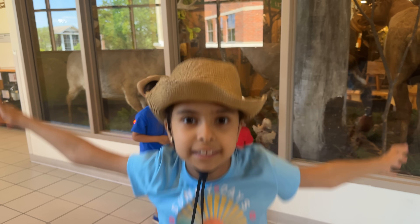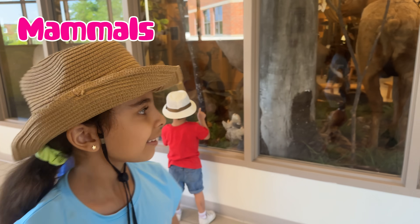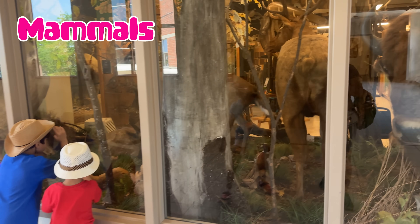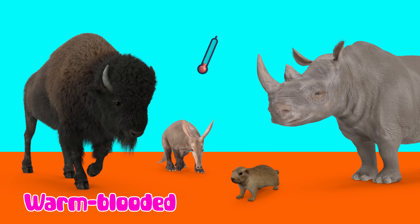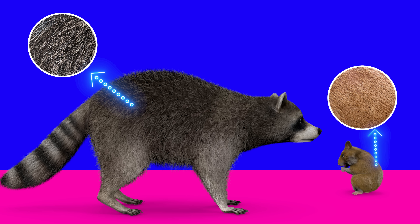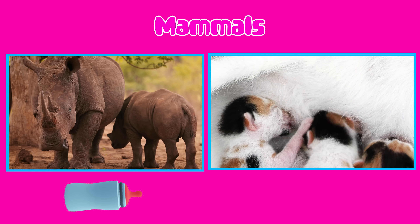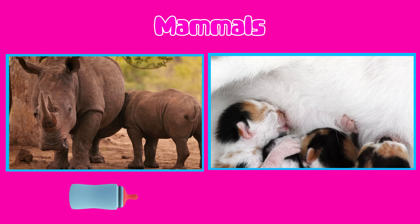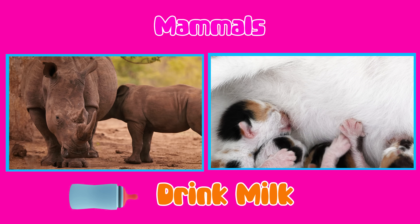Here you can see different mammals. Mammals are warm-blooded animals with hair or fur, and most of them have babies that drink milk from their moms.